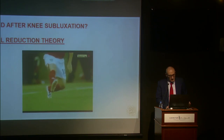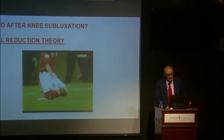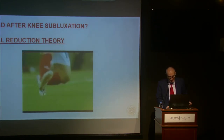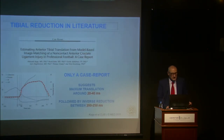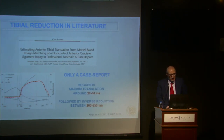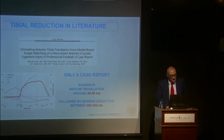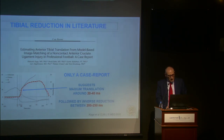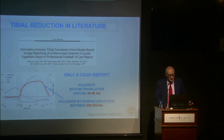When the knee is too bent and they are not able to jump outside, they are in a very bad position. In literature there is only one case report suggesting maximum translation is around 20–40 milliseconds, followed by inverse reduction between 200 and 250 milliseconds. This is the Koga case, and we suggest the maximum translation is around 20–40 milliseconds, in this area where the tibia starts to subluxate.